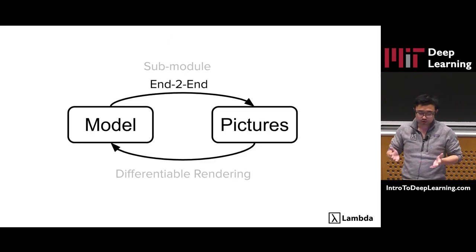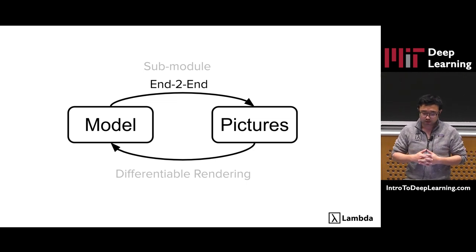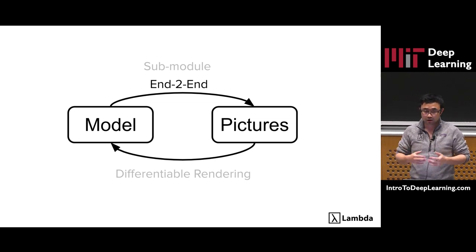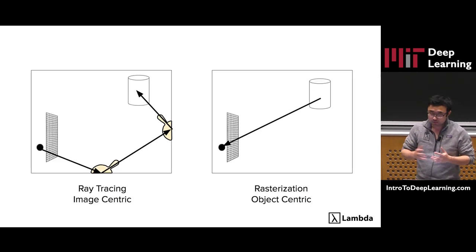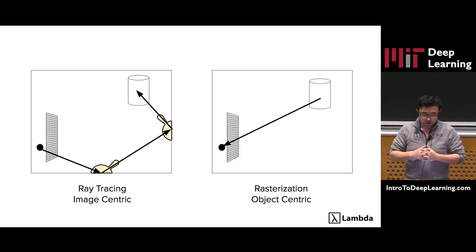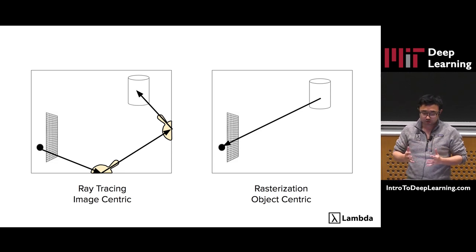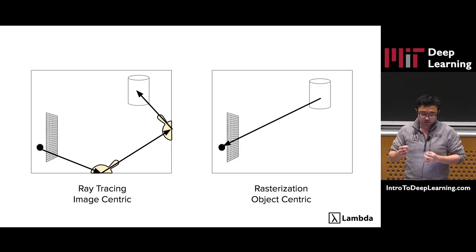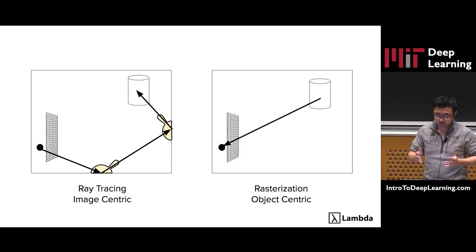So far we have been talking about how neural networks can be used as a sub-module for forward rendering. Next I'm going to talk about how we can use neural networks as an end-to-end pipeline. Remember, we talked about ray tracing, which starts from casting rays from the pixel to the 3D scene — this is the image-centric approach. This approach is kind of very difficult for neural networks to learn, because first of all it's recursive, and second, you need to do discrete sampling, which is very difficult to do analytically.